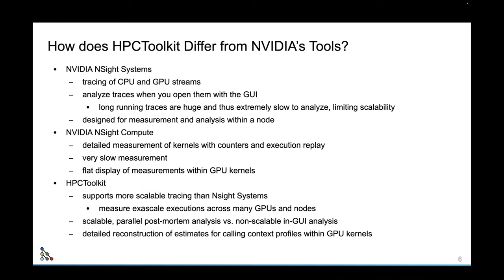So how does HPC Toolkit differ from NVIDIA's tools? NVIDIA's Nsight Systems does tracing of CPU and GPU streams, and you analyze the traces when you open them in a GUI. Long-running traces are huge and extremely slow to analyze, limiting scalability, and it's designed for measurement analysis within a node. NVIDIA also has Nsight Compute, which supports detailed measurement of kernels using hardware counters, PC sampling, and execution replay — but the measurement is very slow, replaying kernels 10 times, and it shows a flat display of metrics within the GPU kernel without calling context.